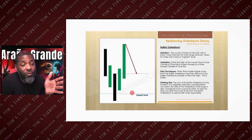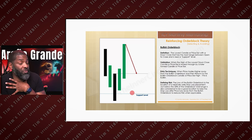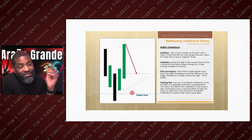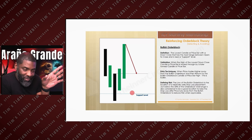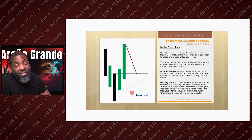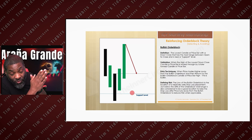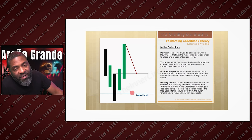Validation occurs when the high of the lowest down-close candle is traded through by a later candle — that's straight from ICT. From the ICT concepts entry techniques: when price trades higher away from the bullish order block and then returns to it, that's bullish. For a bearish order block, you create the block and price trades down away from it — just flip it on its head.